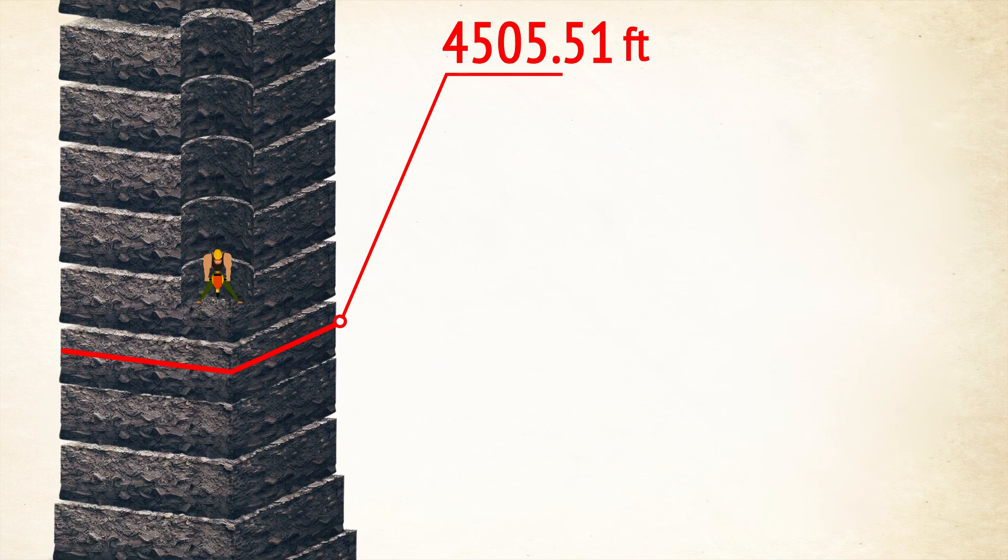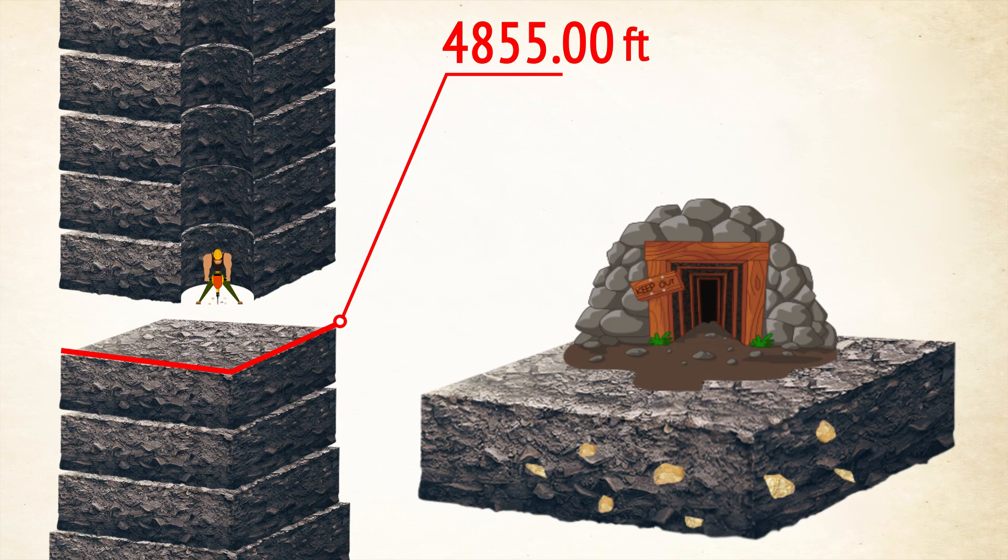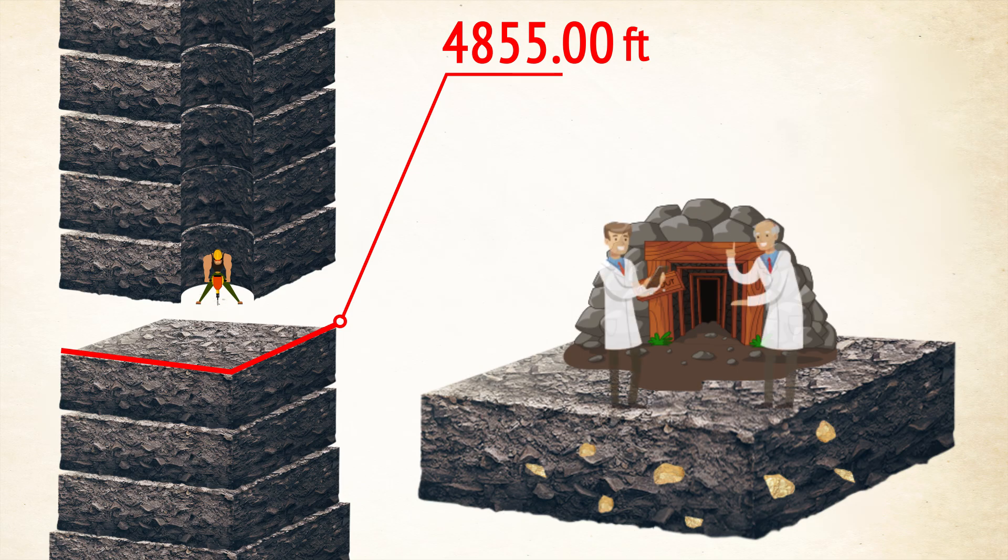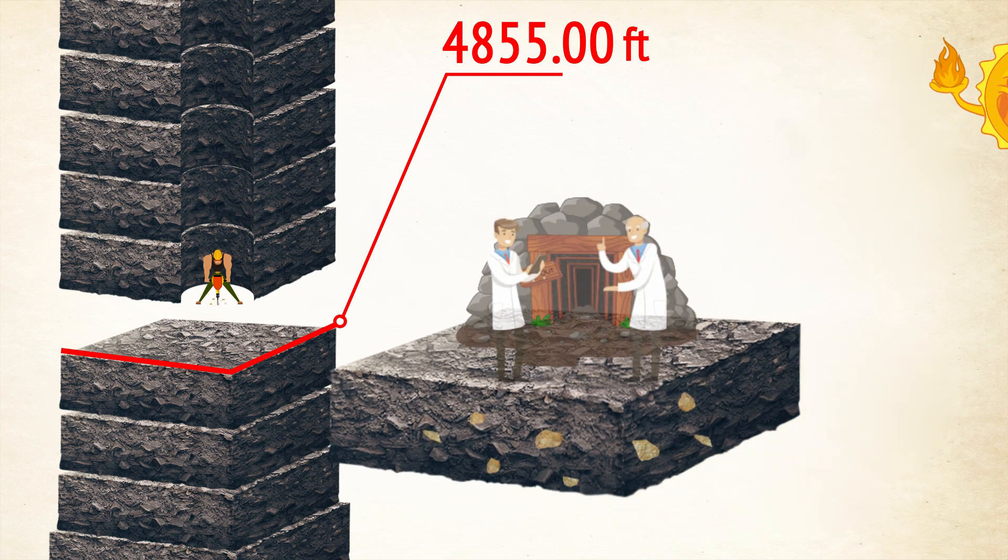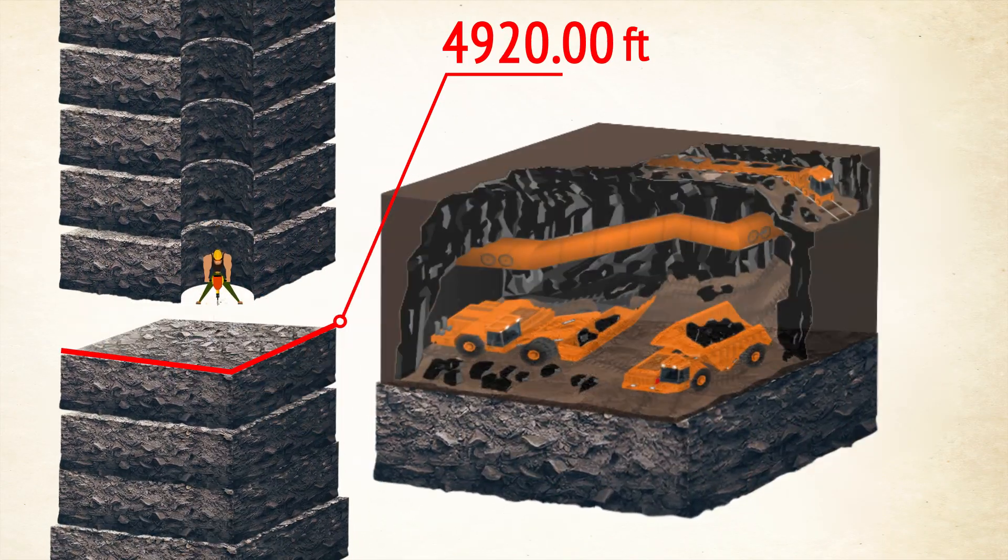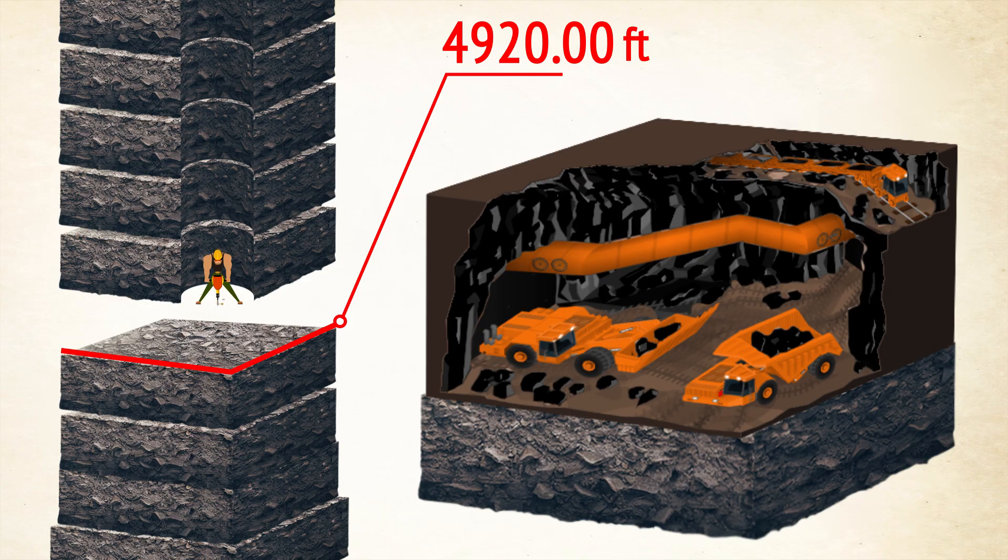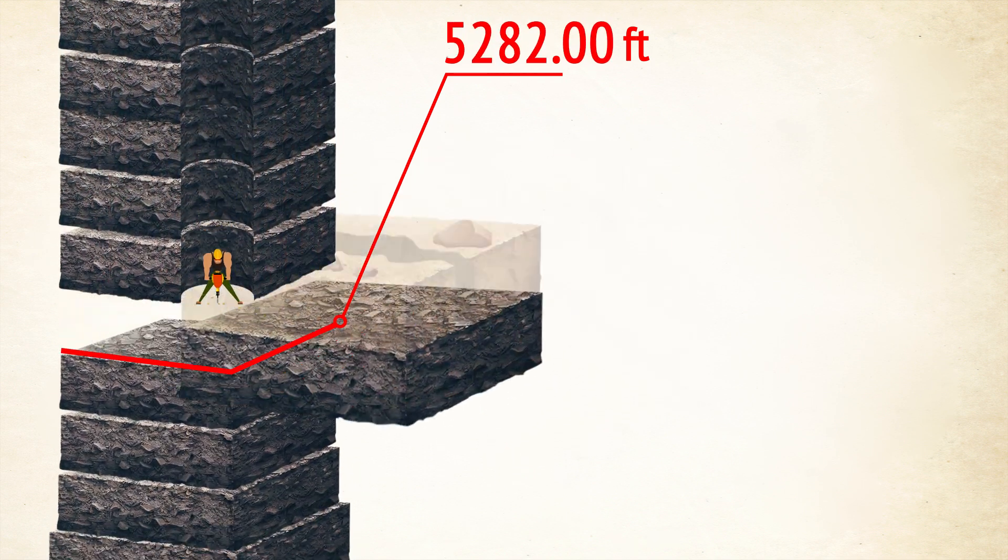Then, there's Homestake Gold Mine in the USA. Its depth is 4,855 feet. In 1965, this mine hosted a successful experiment. Scientists detected and counted neutrinos, subatomic particles from the sun. The deepest coal mine is the Jindřich II mine, which is located in the Czech Republic. It has a depth of 4,920 feet and closed in 1991.